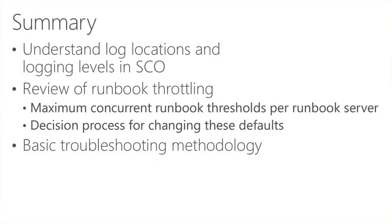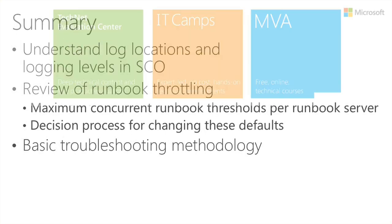In summary, I hope I've given you information about how logging works with Orchestrator, the different logging levels, and how to configure them. We covered runbook throttling — considering your runbook server's load, resource intensity, and number of runbooks — and how to set the throttling value if the default of 50 doesn't work for you. Finally, we covered basic troubleshooting using the real-time and historical logging tabs.